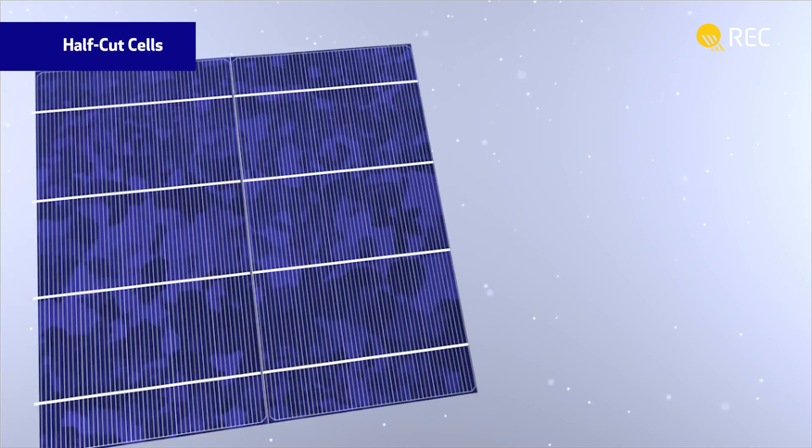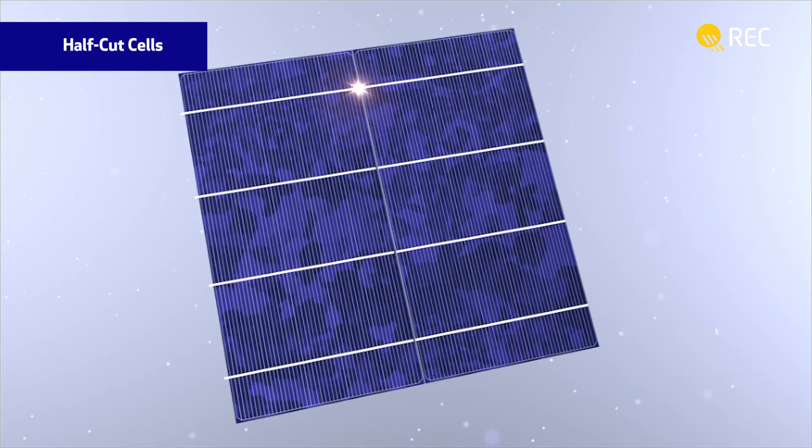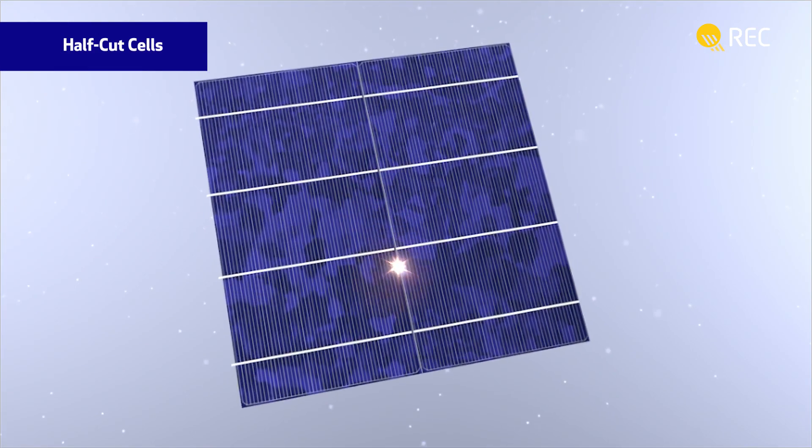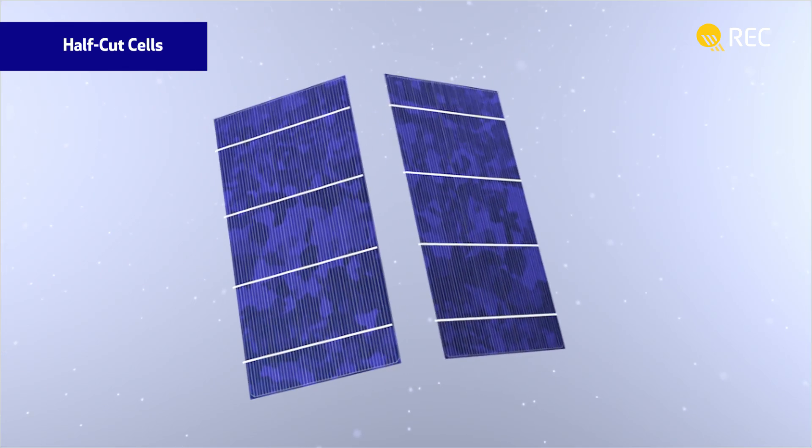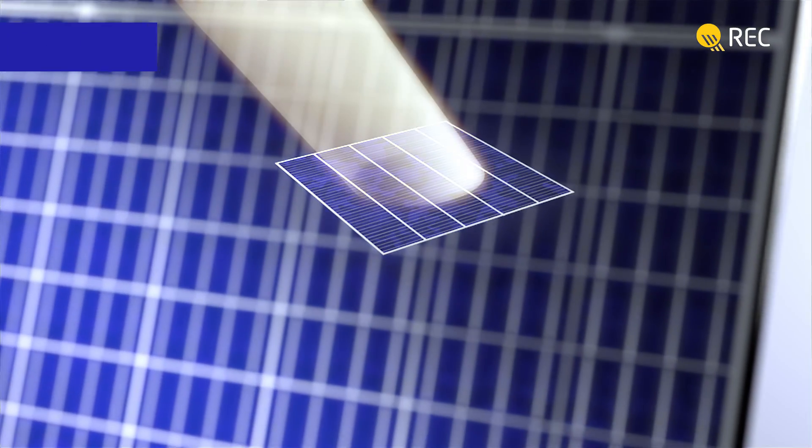These half-cut cells are made by laser-cutting standard cells in two, reducing the resistance in the cells and resulting in more power output. The second feature of the panel is its use of PERC.